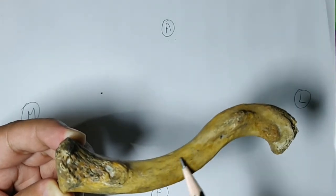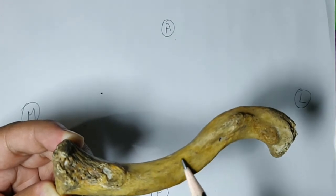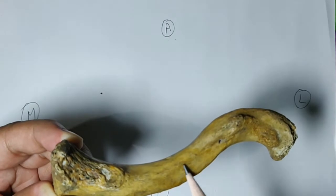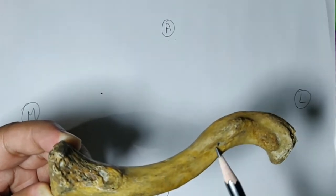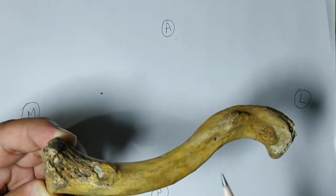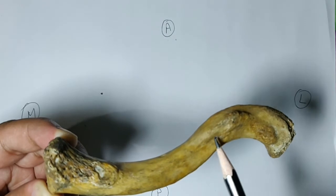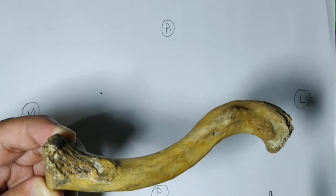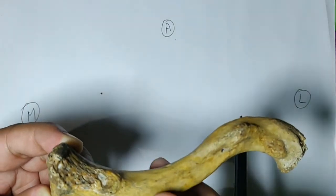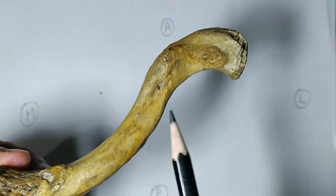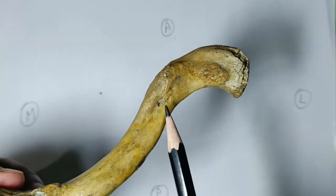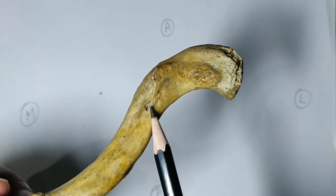On the lateral half of the inferior surface, you will see a groove known as the subclavian groove, which gives attachment to the subclavius muscle. The margins of this groove give attachment to the clavipectoral fascia. Also visible in this bone is the nutrient foramen, which lies lateral to the groove.